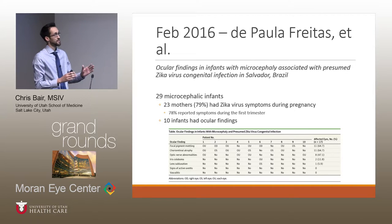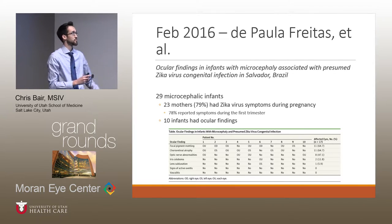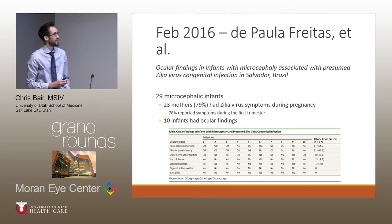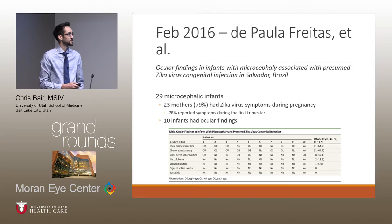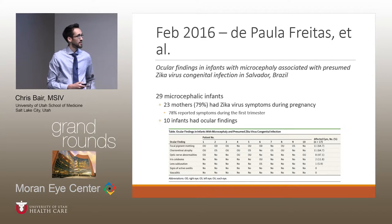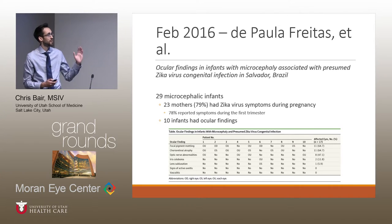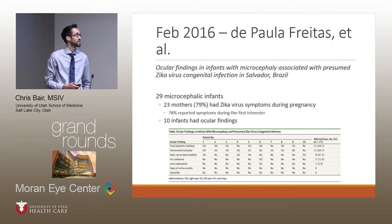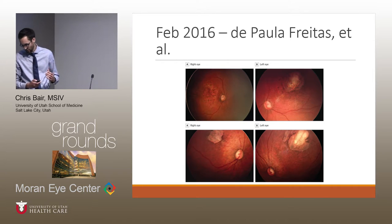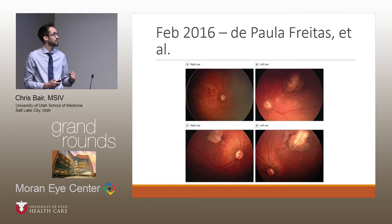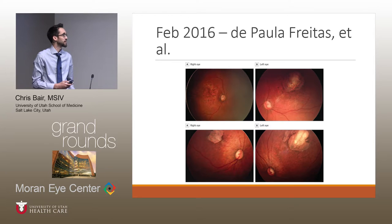That same month, a separate group independently published a very similar study with similar results. This was a slightly larger study of 29 microcephalic infants, 10 of whom had ocular findings. Interestingly, the same percentage — about 70% — of mothers had symptoms of Zika virus during their pregnancy. Again, the most common findings were pigment mottling, chorio-retinal atrophy, and optic nerve abnormalities. Images showed an enlarged cup-to-disc ratio bilaterally along with chorio-retinal scarring and optic nerve abnormalities in these infants.